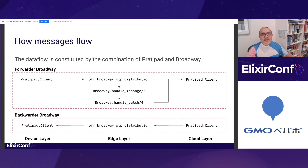Let's dig deeper. This figure shows how messages flow. Platypad is a message sender and receiver for the backward data flow. First, it establishes a connection to the Broadway pipeline. Second, it sends messages to the producer running as part of the pipeline. Finally, it receives messages sent from the other side. Messages can be processed and transformed in this data flow.